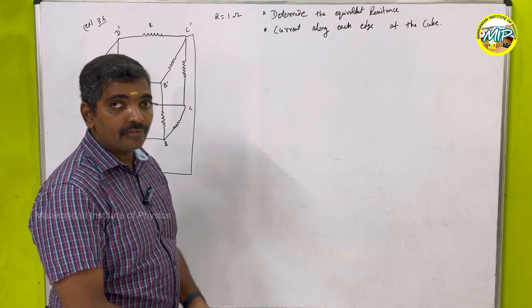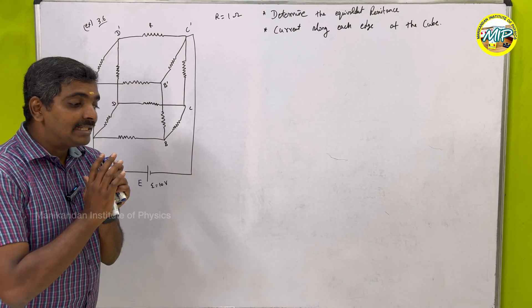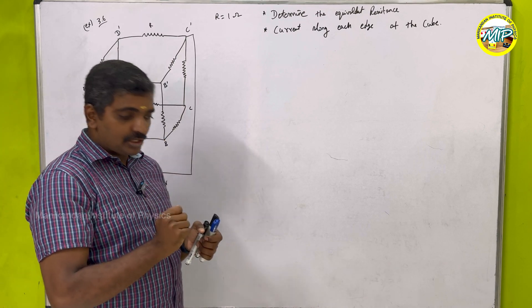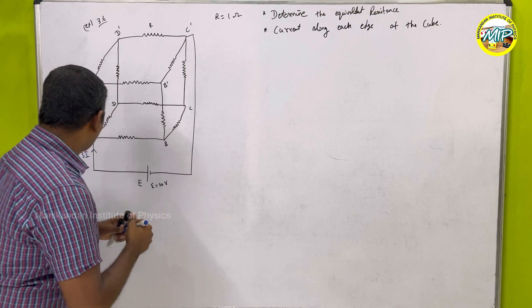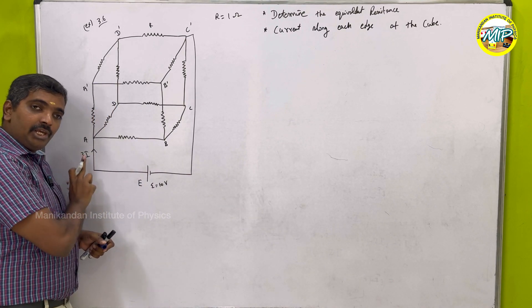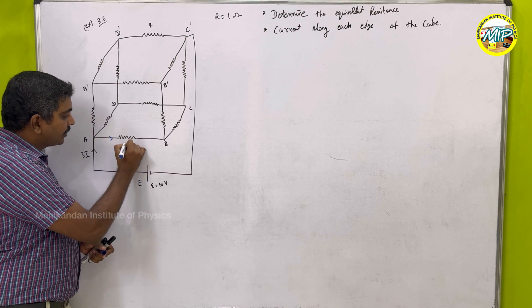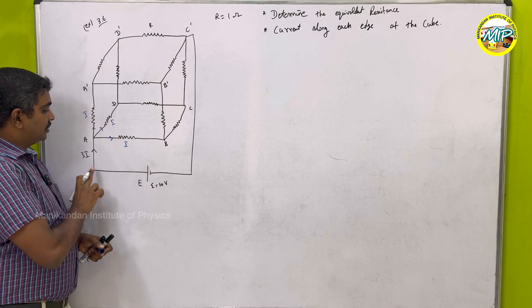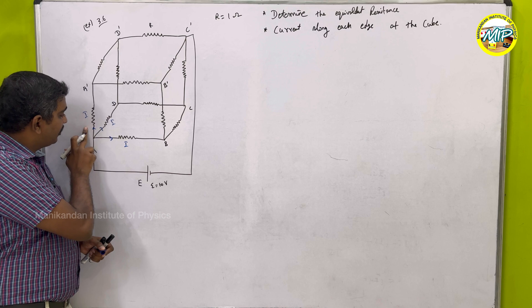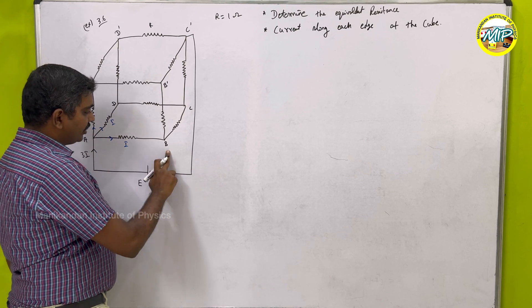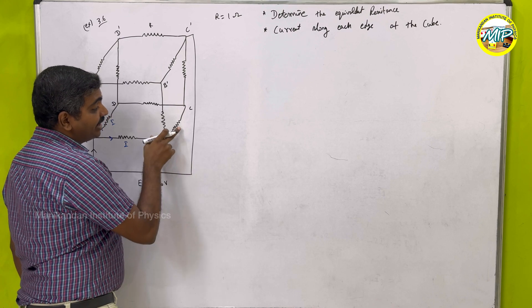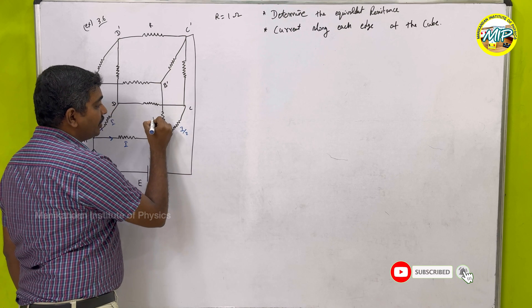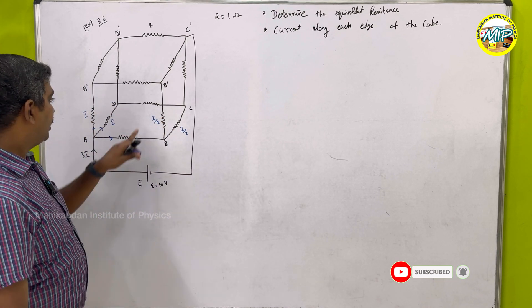Totally we have 12 resistors. Starting with the junction rule — the amount of current entering the junction equals the amount of current leaving. The amount of current entering here is 3I. So at each of the three edges from the source node, the current is I. Since the resistors are equal, the current I coming in splits into two equal parts: I/2 and I/2.